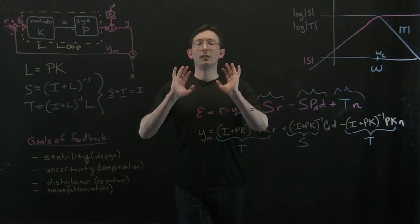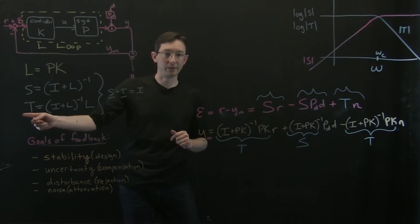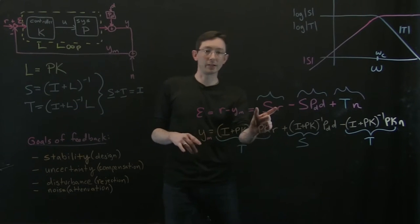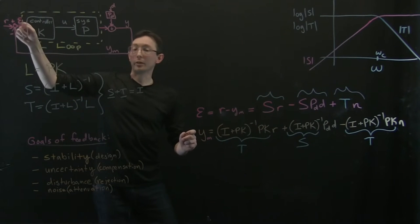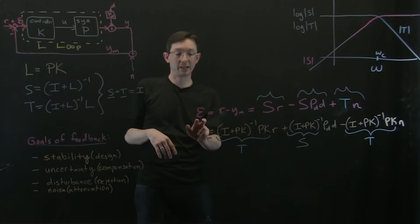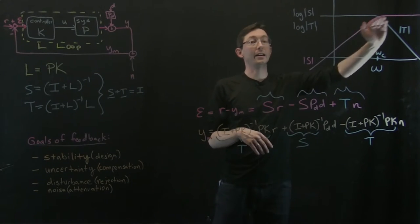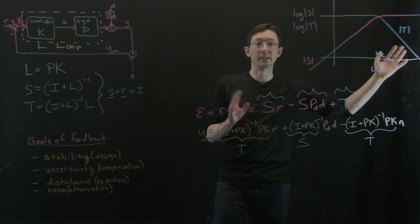All right, welcome back. So we have introduced the sensitivity and complementary sensitivity functions, which essentially tell us how our closed loop system performs given reference, disturbance, and noise inputs. In particular, how do we keep epsilon small by designing the sensitivity and complementary sensitivity functions.